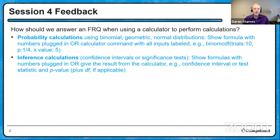The second type is inference calculations — confidence intervals or significance tests. You can either show formulas with numbers plugged in, or give the result directly from the calculator: write down the confidence interval, or write down the test statistic and the p-value, plus any degrees of freedom applicable to that procedure. If using the calculator, it's a good idea to write down the name of the actual procedure used, like 2-SAMP t-test, for example.